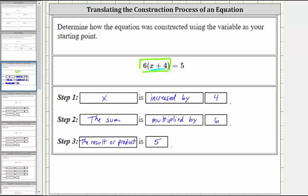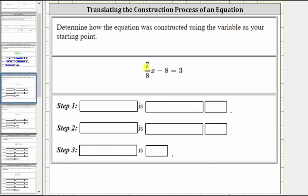Let's take a look at our second example. We have the equation (7/8)x - 8 = 3. Beginning with the variable, (7/8)x means (7/8) times x, and therefore the first step is x is multiplied by 7/8.